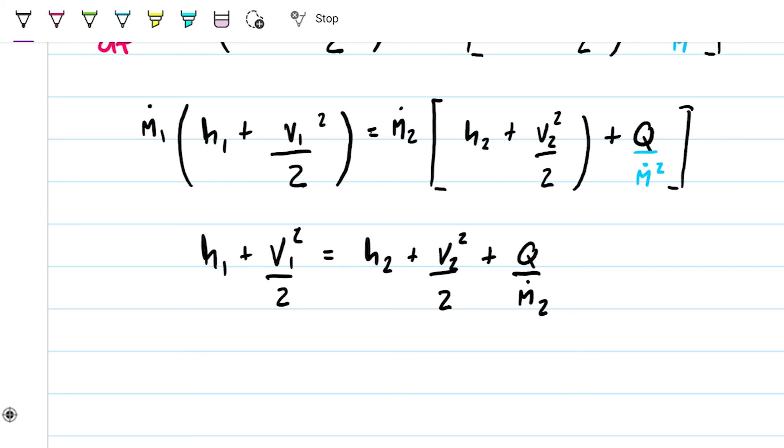It can be mass flow rate one or mass flow rate two, it doesn't matter. This guy's going to have, because they're the same, this guy's going to have the mass flow rate component still attached to it, plus Q over mass flow rate.